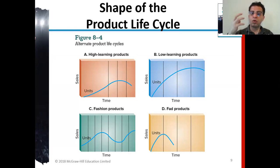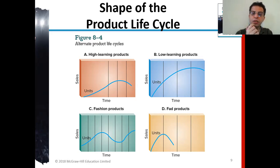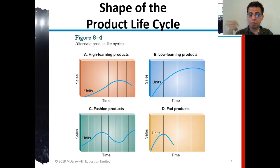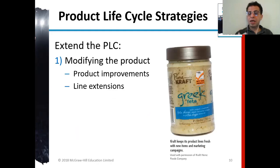The alternate product life cycle: you need to consider whether it's a high-learning or low-learning product. Our IT solution was high-learning, so it took time to grow sales. For low-learning products, sales rise quickly. Fashion products like clothing go up and down — jeans from the '70s are popular again today. Fad products like typewriters and CD players simply decline totally when a better substitute comes in.